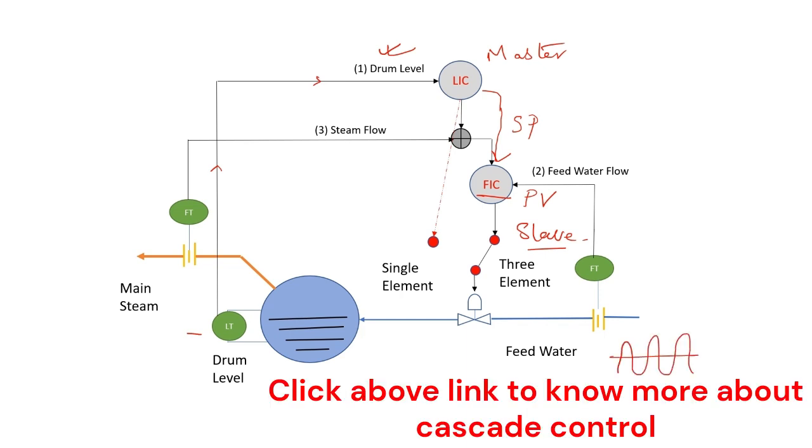In this way, the variation in the feed water flow line can be accounted for, and this is known as the two element boiler drum level control.